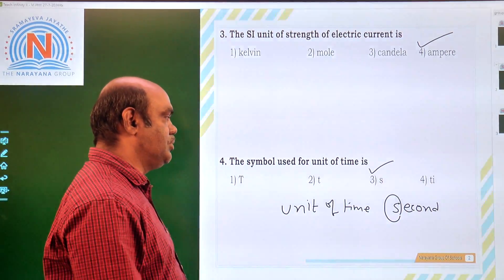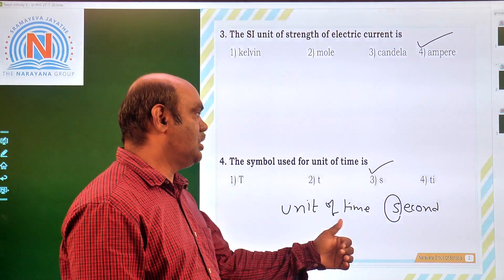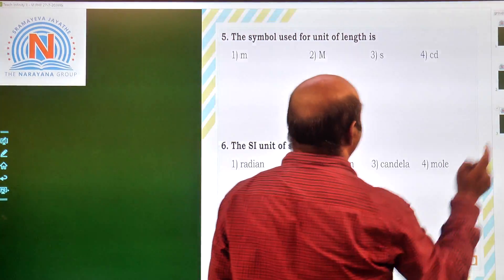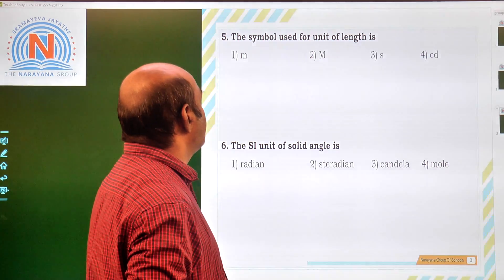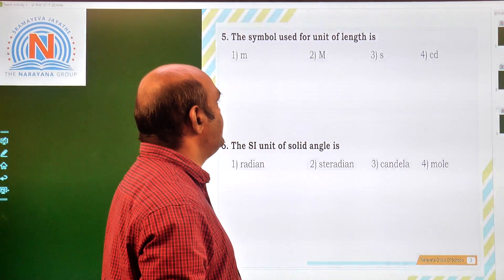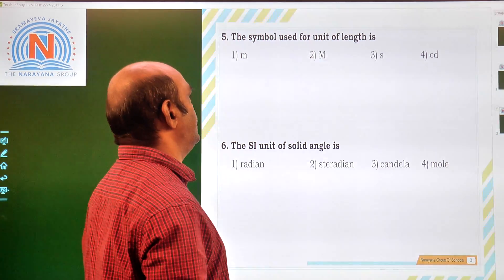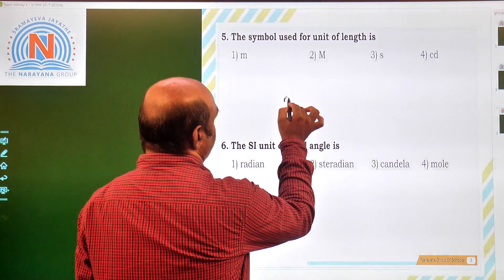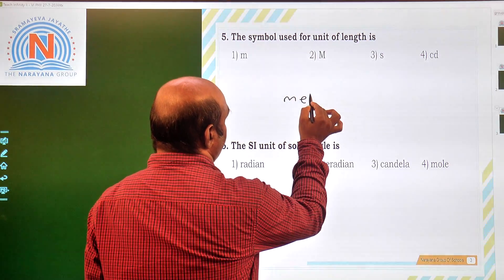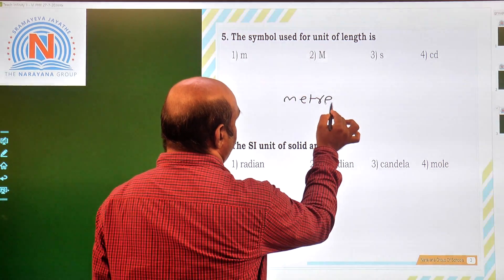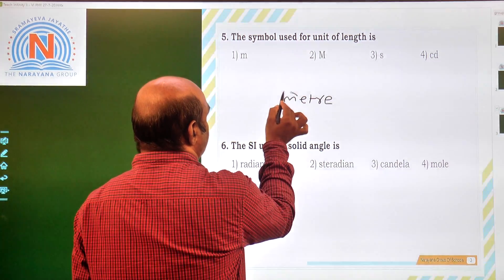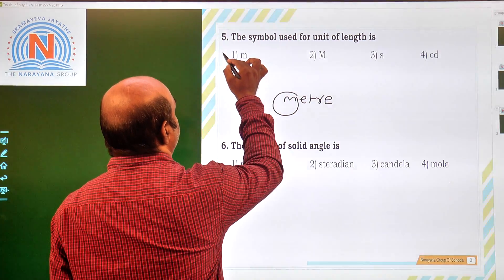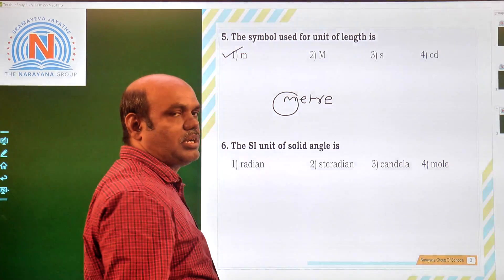The symbol used for the unit of length. The unit of length is meter, and its short symbol is small m. That is why the first option is correct.